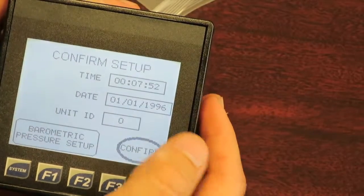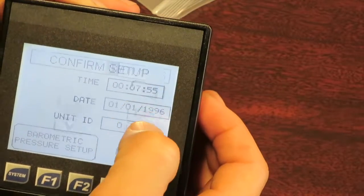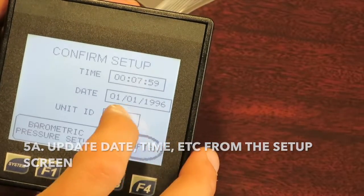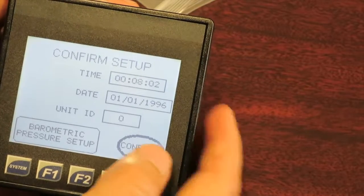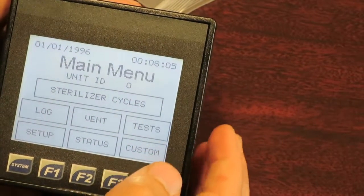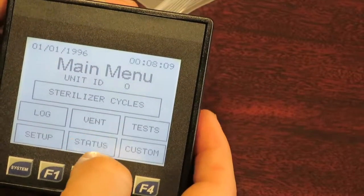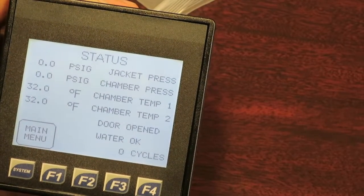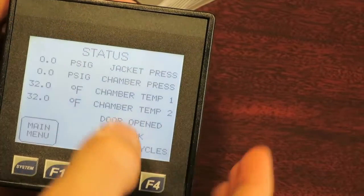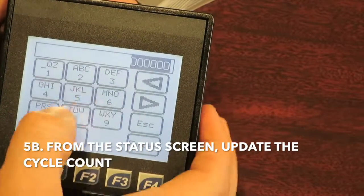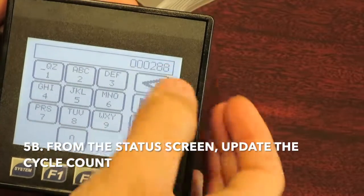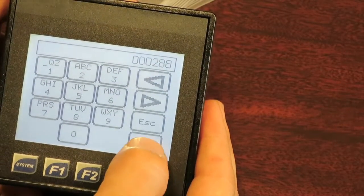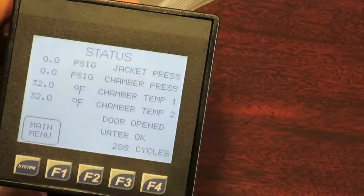And now the confirm setup screen comes up where you can reset all your parameters like normal time, date, unit ID, can do your barometric pressure set up. You can press confirm and you're back to your main menu. You can also go to the status and you can update your cycle count. If you previously had a few hundred cycles on your old PLC, if you want to keep a running count, you can press that and say 200 cycles, 288, then I can keep track of how many cycles have been run on this sterilizer main unit. Press enter and now I know how many cycles have been run.